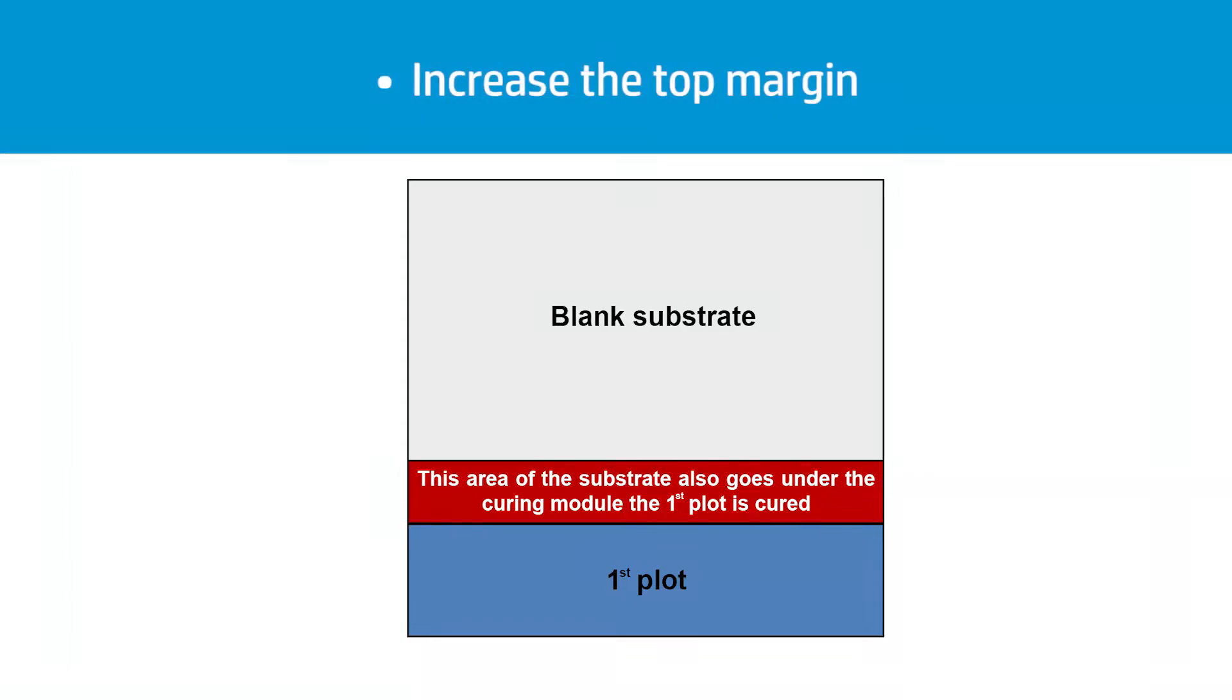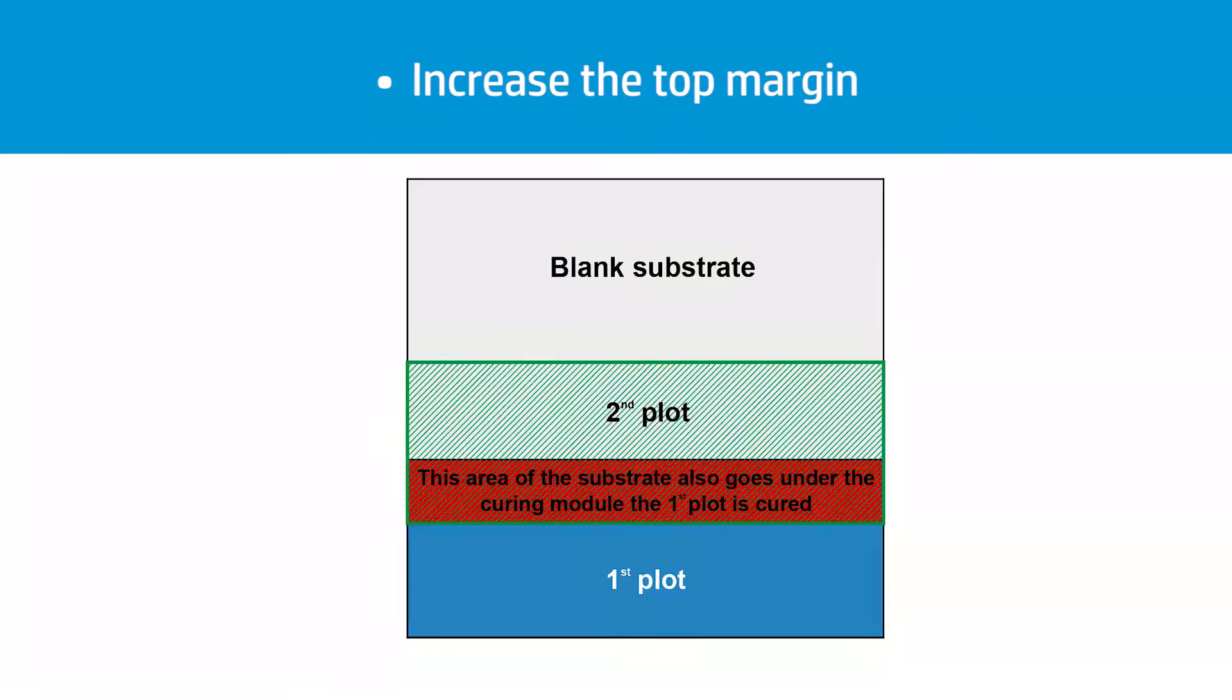If only the first part of the prints are deformed, the cause may be that this piece of substrate passes under the curing module twice and suffers more deformation than the rest of the substrate. The first time it passes under the curing module is while the last part of the first plot is cured, and the second time is while the second plot is cured.